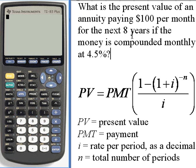Here's what this means. We want to know how much money you would have to deposit into an account that paid 4.5 percent compounded monthly so that you would be able to take out $100 every month for the next eight years.